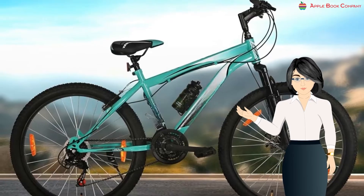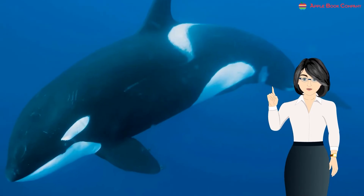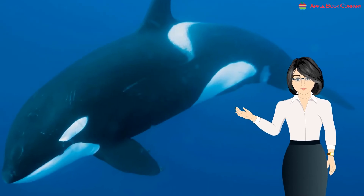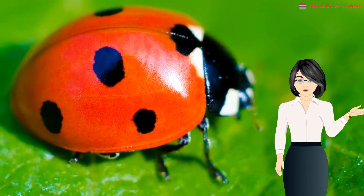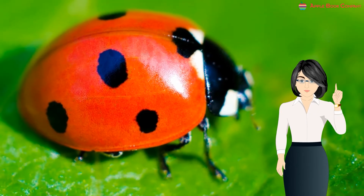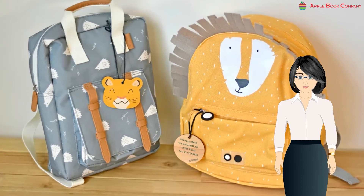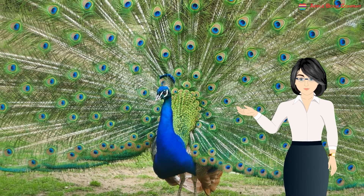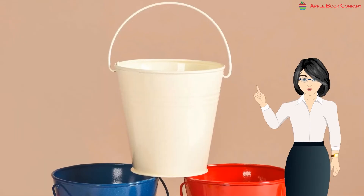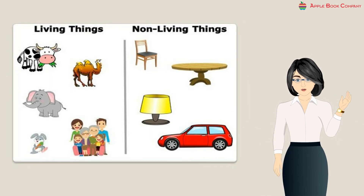A chair is a non-living thing because it cannot breathe. A cycle is a non-living thing. A whale is a living thing because it can move, breathe, and eat. A ladybug is a living thing.